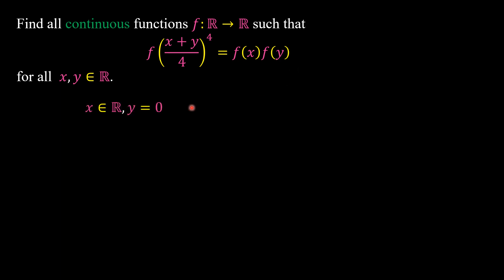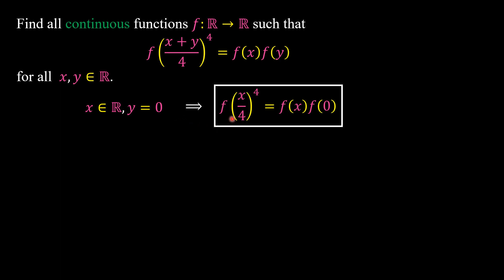First, if x is any real number and y equals 0, then we have f(x/4) to the power of 4 equal to f(x) times f(0). Now we are looking for the possible values of f(0).